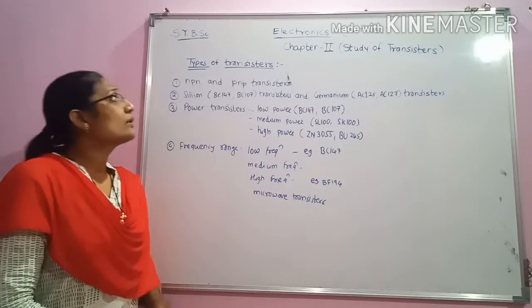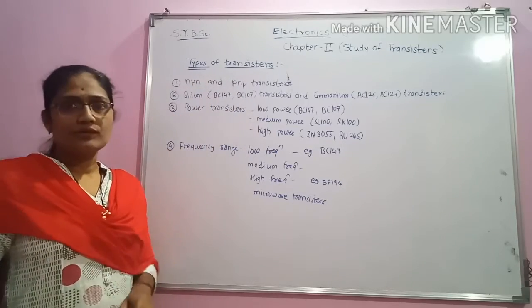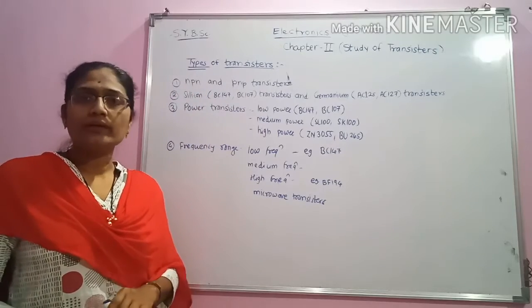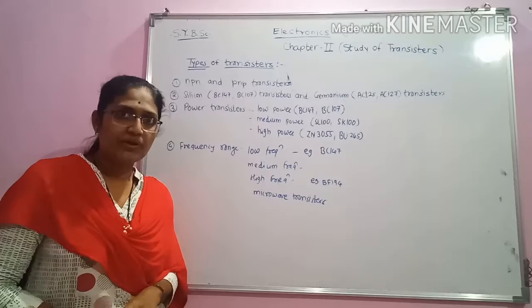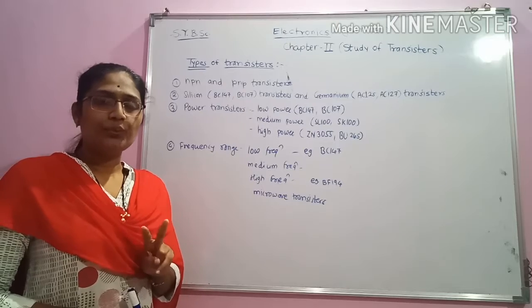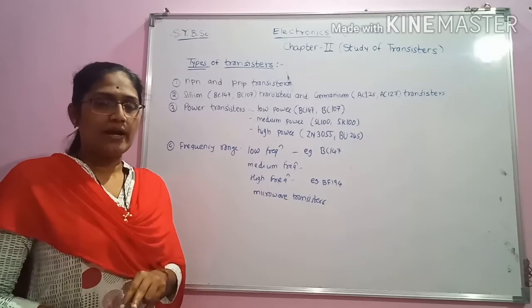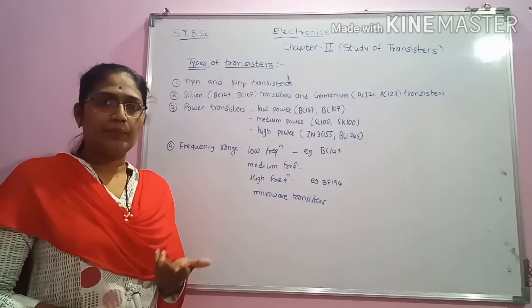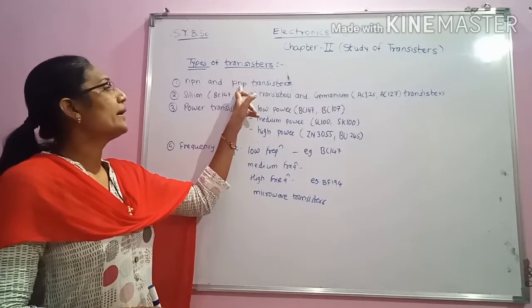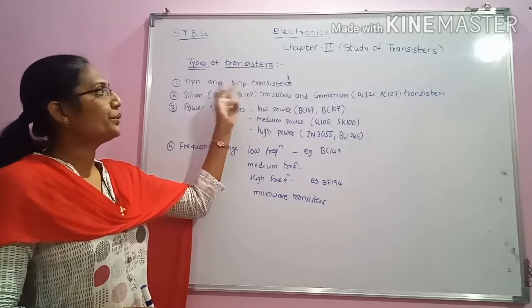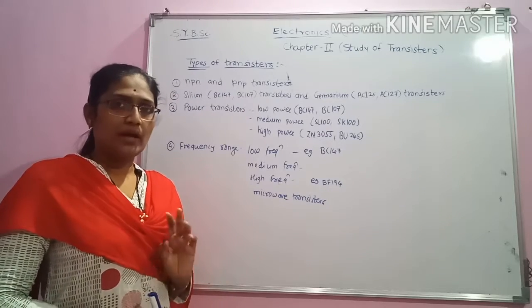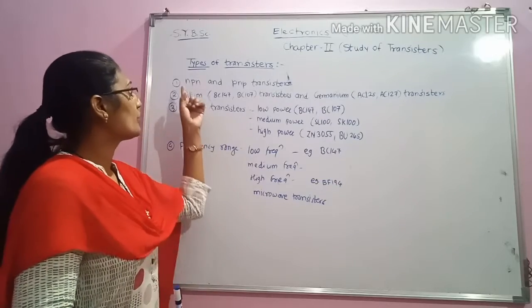The first type of transistors is based on their construction. We have already seen what are the NPN transistors and what are the PNP transistors. In case of NPN transistors, a P type of material is sandwiched between two N type of semiconducting materials, and there will be three terminals: emitter, base, and collector. In case of PNP transistors also, an N type of material is sandwiched in between two P type of semiconducting materials. It also consists of three terminals: emitter, base, and collector.